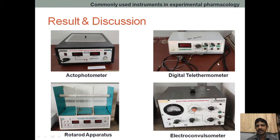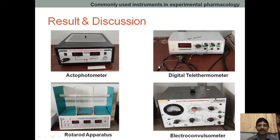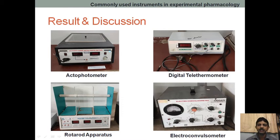Coming to the digital telethermometer, it is a 6-channel digital thermometer. Probes are there — for example, probe number 1 — and we are going to place this probe into the rectum of the rat. We generally use rats to evaluate the antipyretic activity. As soon as we place the probe into the rectum, it will display the temperature, so we can check the animal's temperature and evaluate antipyretic activity.